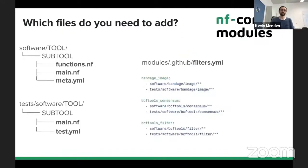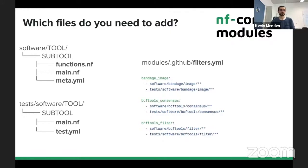If you want to add a new module to the NFCore modules repository, there are five files mainly. Riki talked already about the function.nf file, the main.nf file, and the meta.yaml file, which are stored in the software tool and subtool directory. For the NFCore modules directory, you also need files for running the tests, stored in the tests software tool subtool directory. There's a main.nf file that defines the Nextflow code to run your tests, and the test.yaml file that specifies the specific things for the tests.